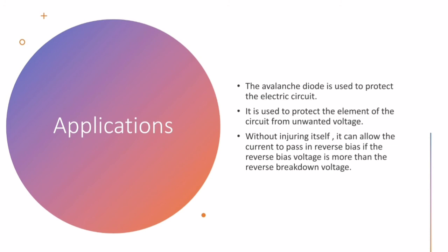Avalanche photodiode is used to protect the element of the circuit from unwanted voltage and without injuring itself, it can allow the current to pass in reverse bias if the reverse bias voltage is more than the reverse breakdown voltage.